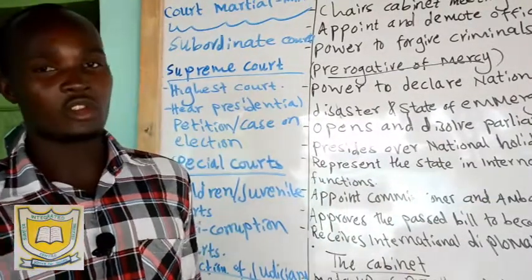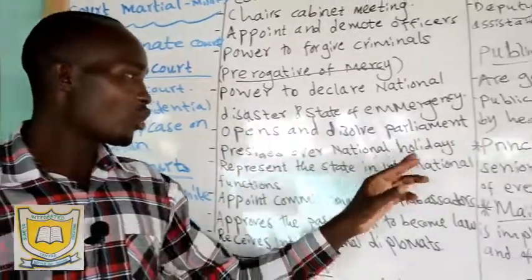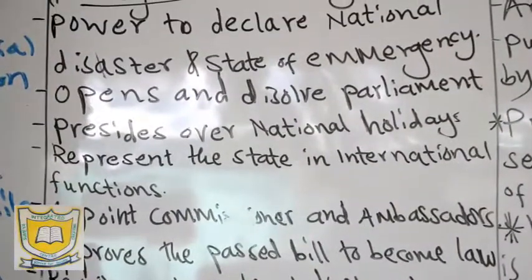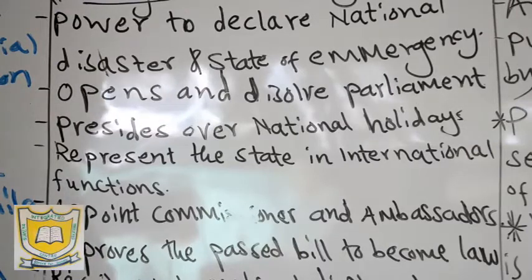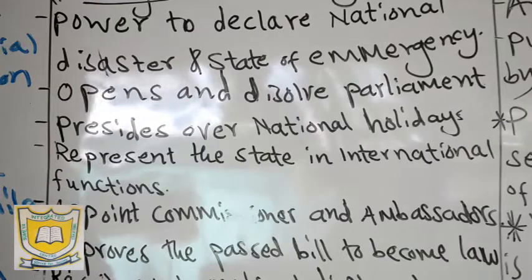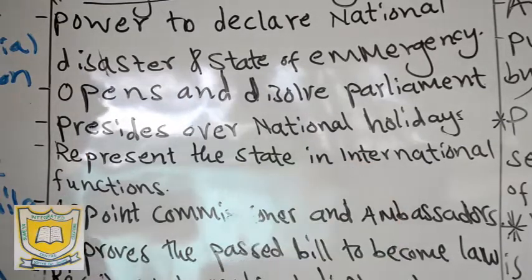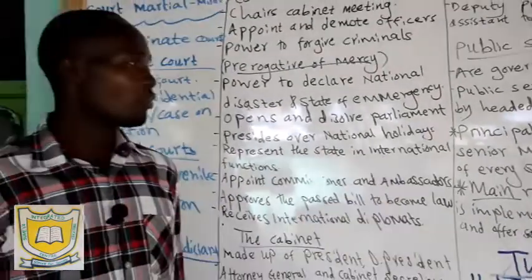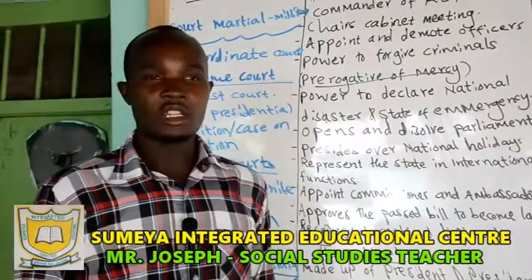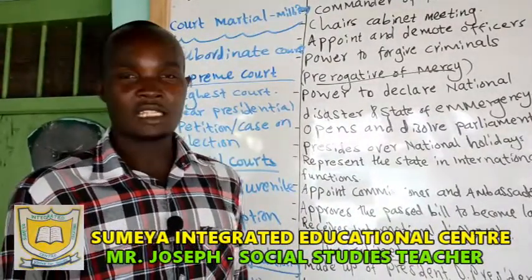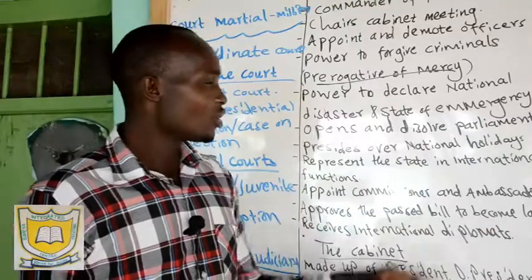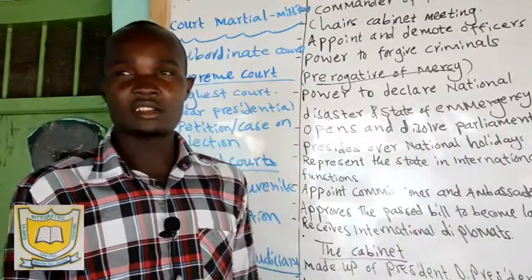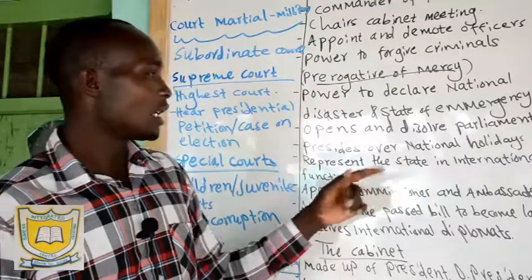Then he presides over national holidays. We have Madaraka Day on 1st June — we remember our internal self-rule or independence from the colonial master, the British. Then we have Mashujaa Day on 10th October — we remember those people who were arrested, killed, and fought for independence, like the Kapenguria Six. Then we have Jamhuri Day — Kenya became a republic with an executive president, Mr. Jomo Kenyatta. The president normally addresses the country on those holidays — that is what presiding over means.